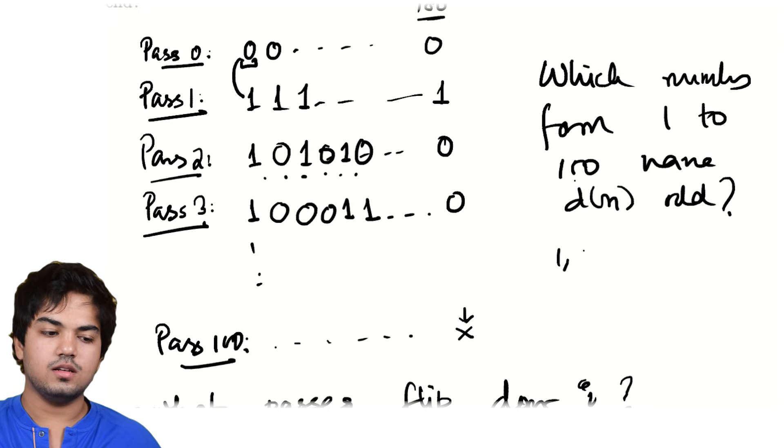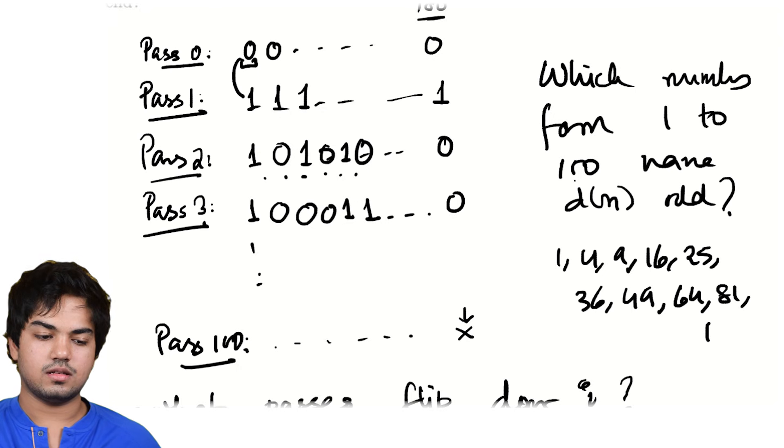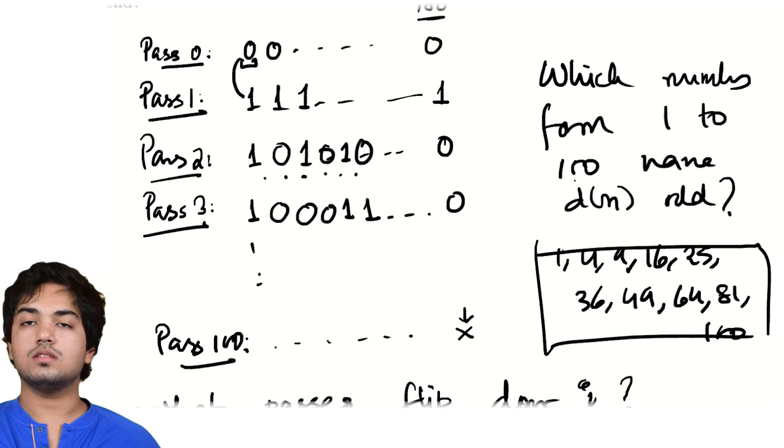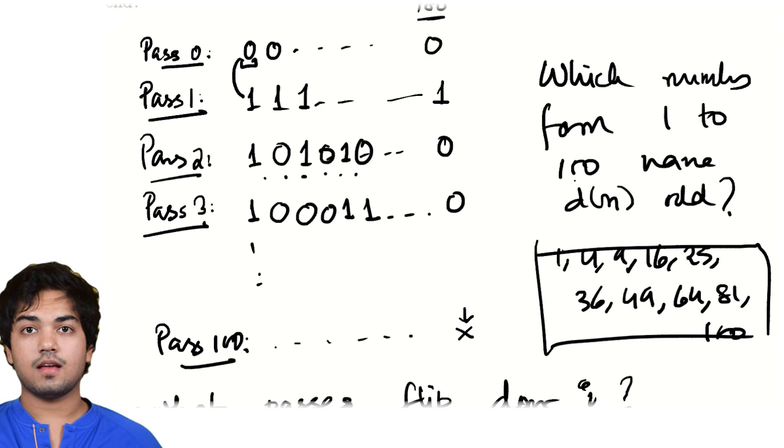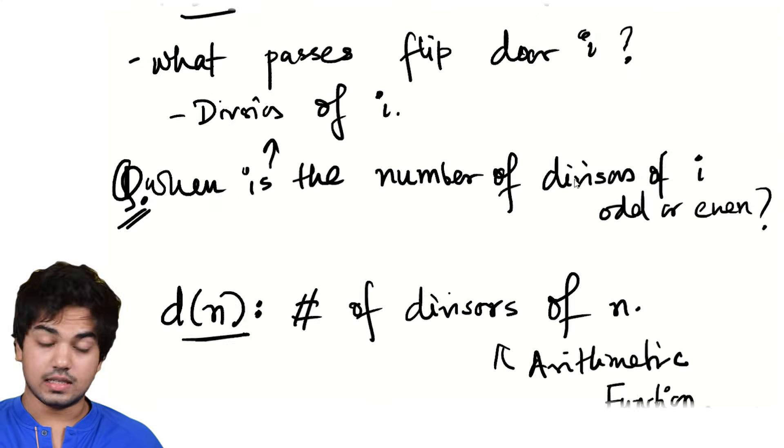And we know what they are: 1, 4, 9, 16, 25, 36, 49, 64, 81, and 100. These numbered doors are the only ones that will stay open at the end of all the passes. So that's that. That's a very cool property.